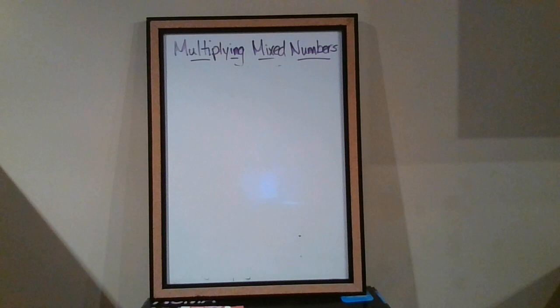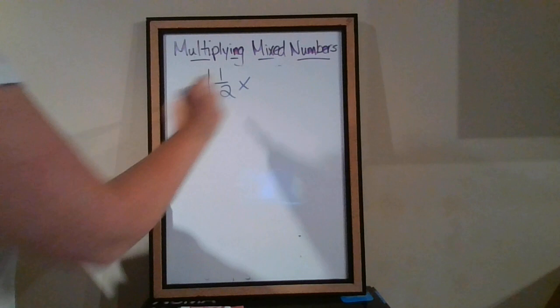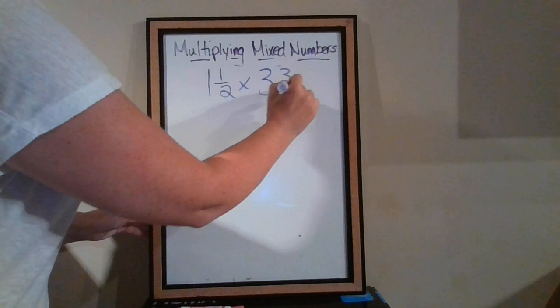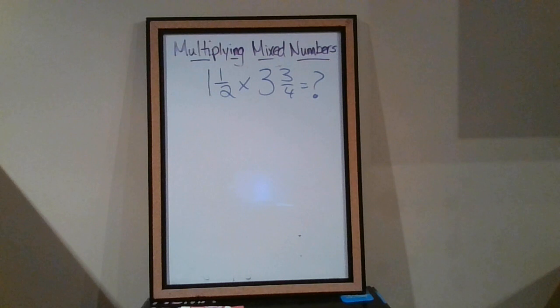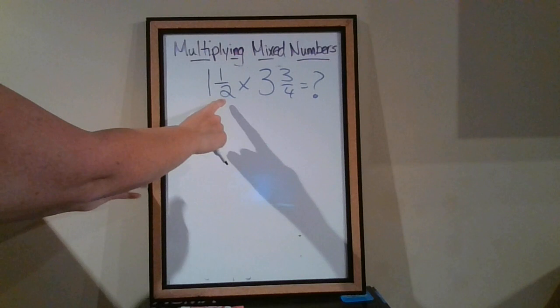So we're going to take, let's say, one and one half, a mixed number, and we're going to multiply it by another mixed number, which is 3 and 3 quarters. So remember, step one is first thing is make the mixed numbers into improper fractions. It's too complicated to multiply when they're a mixed number. It's very simple when they're a fraction.